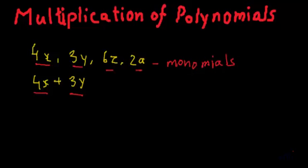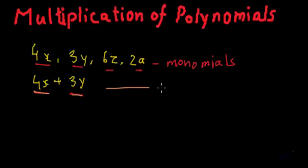Expressions which have two terms, like the second one we have written — it has two terms, 4x and 3y — this is called a binomial.